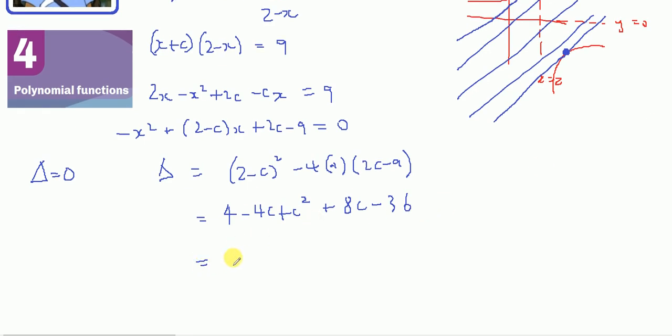Which gives you c squared, 8c minus 4c plus 4c minus 32. Collecting terms: c squared plus 4c and minus 4 on the 8.